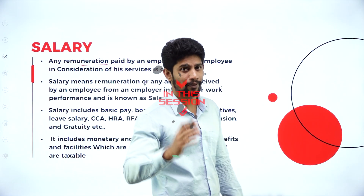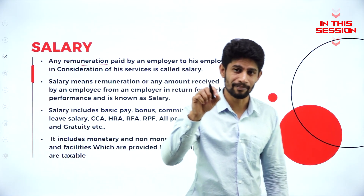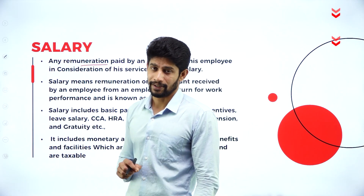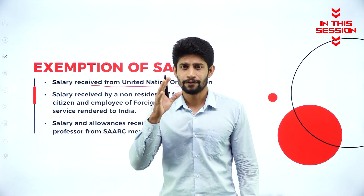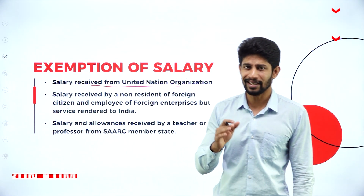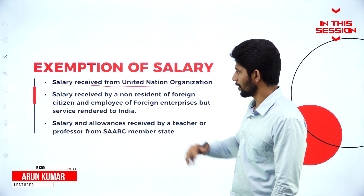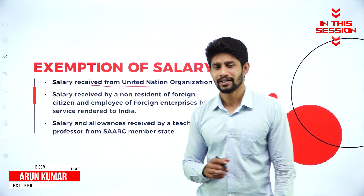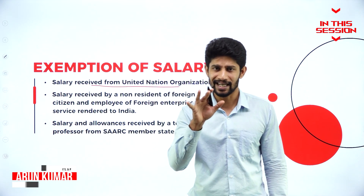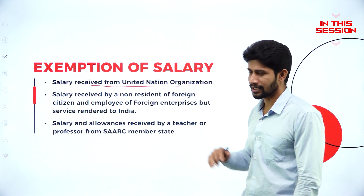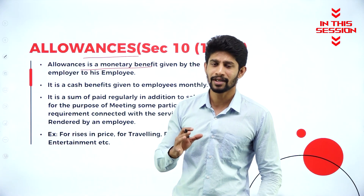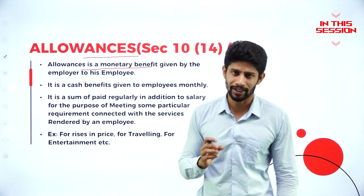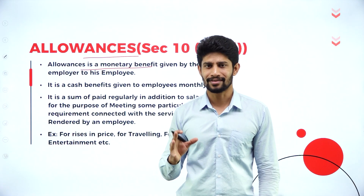Any remuneration paid by the employer to his employee for the service rendered by the employee is called salary. If you are receiving any salary from the United Nations Organization, that is from UNO, then that is not taxable — it is exempted under the income tax rule. Allowances is nothing but the monetary benefit given by the employer to his employee.